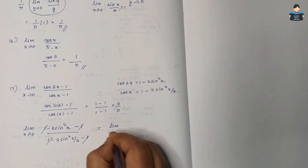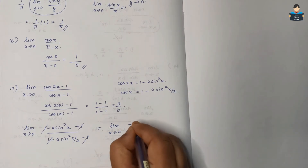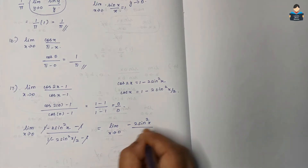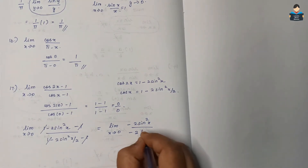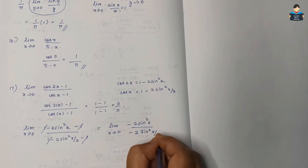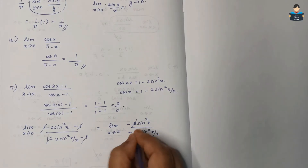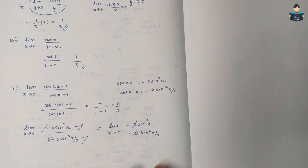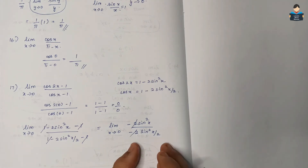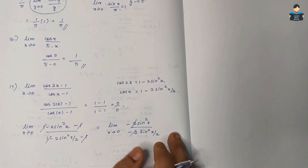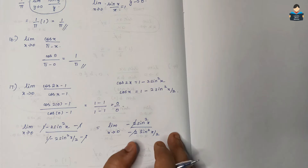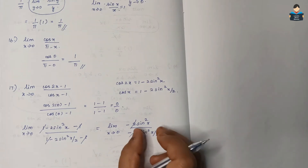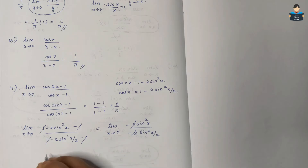So we have limit x tends to 0 of −2sin²x by −2sin²(x/2). The −2 cancels, leaving sin²x by sin²(x/2). We now write this in the sin(x)/x format.